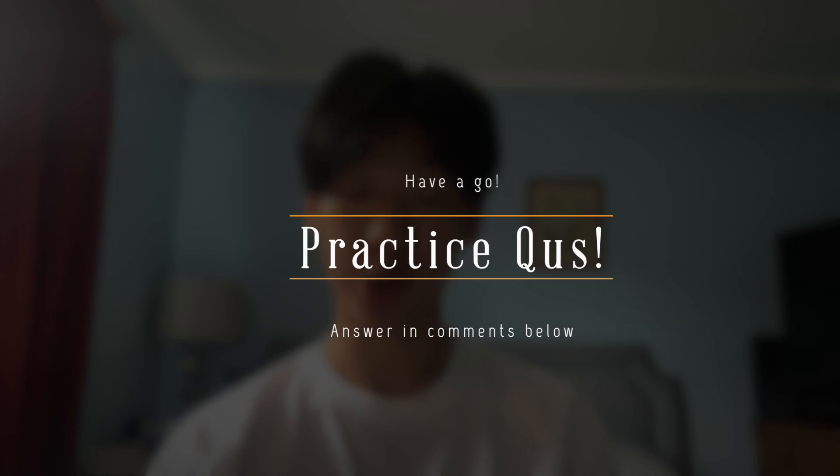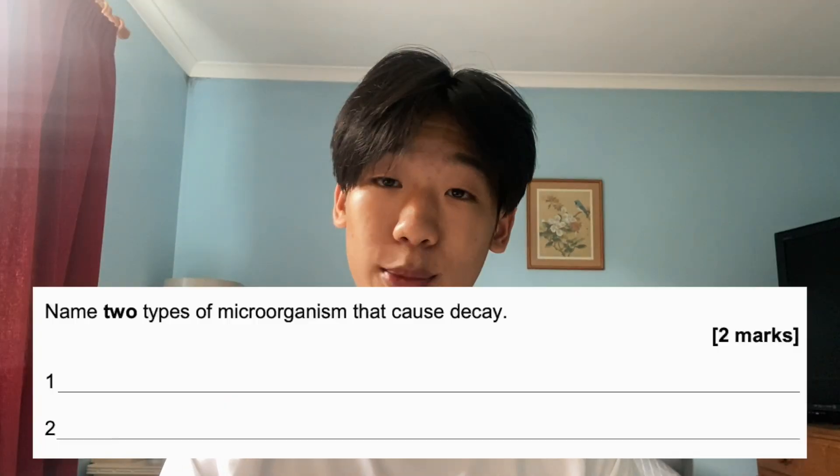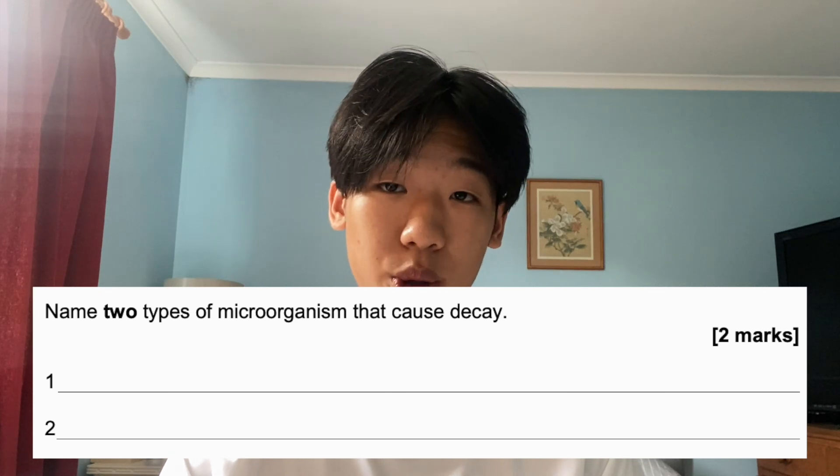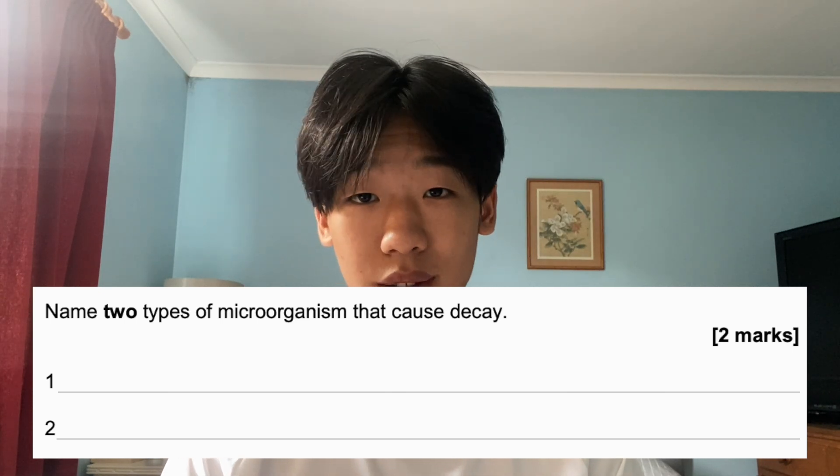Here are some practice questions you can try to answer in the comments. Try to answer without looking at your notes first, then check your notes, compare with other people's answers, and give each other honest feedback. Question one: name two types of microorganisms which can cause decay — worth two marks, one or two word answer. Question two: name the part of the brain responsible for making a decision — worth one mark, one word answer.